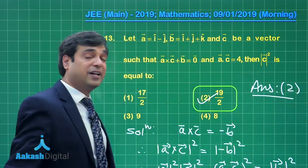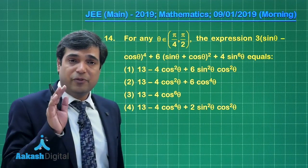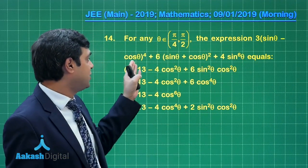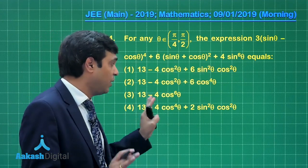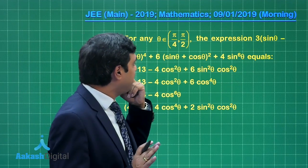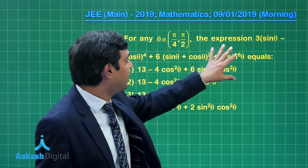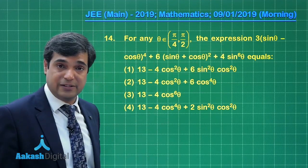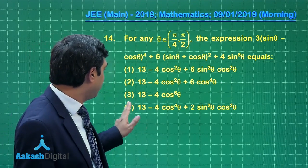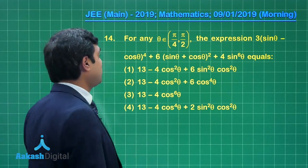Moving on to question number 14. For any theta in the interval pi by 4 to pi by 2, the expression (3 sin theta minus cos theta)^4 and so on equals one of four options. Looking at the expression, there is a sine 6 theta term and no other term that can generate a factor of 6. Option number 3 has cos 6 theta, so it is possibly correct, but we need to verify.